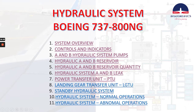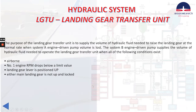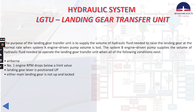Now, if we talk about the landing gear transfer unit, the purpose of the landing gear transfer unit is to supply the volume of hydraulic fluid needed to raise the landing gear at the normal rate when system A engine driven pump volume is lost. The system B engine driven pump supplies the volume of hydraulic fluid needed to operate the landing gear transfer unit when all of the following conditions exist.